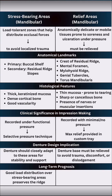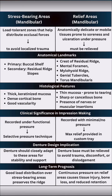Why does this matter long-term? Because good load distribution over stress-bearing areas helps to preserve the residual ridge, while constant pressure over relief areas can cause soft tissue injury, bone loss, and reduced retention.